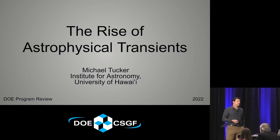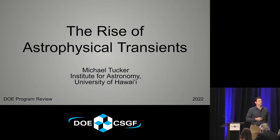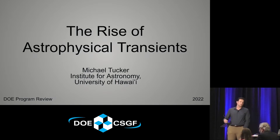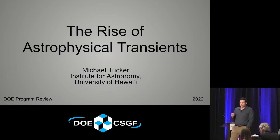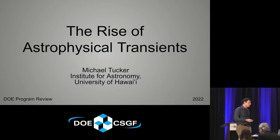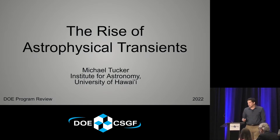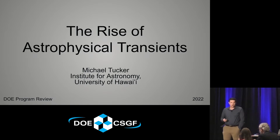Usually our HPC resources are dedicated to things like theory simulations, as we try and build higher resolution, bigger, better, etc. But in the last five to ten years, computing has become a really important part of how we process and analyze data in astronomy. I'll give you a little tour of how and why we do that through the lens of my topic, which are astrophysical transients.